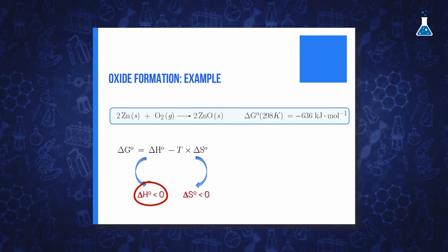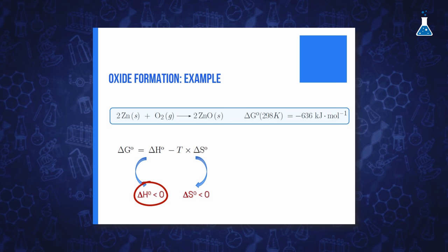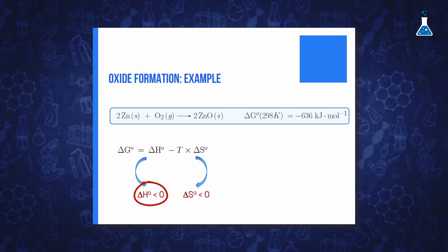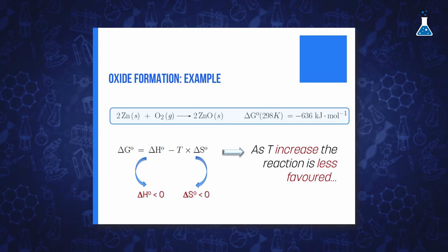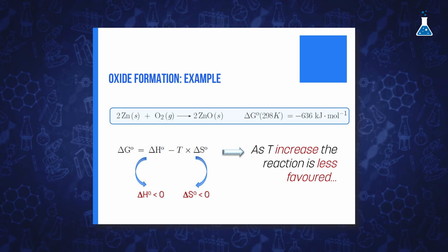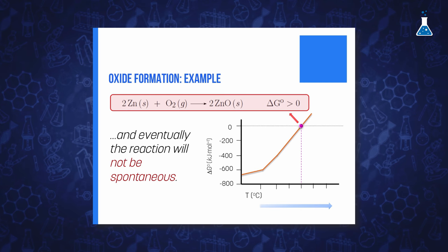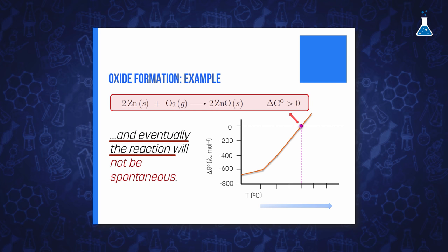The negative value of the Gibbs energy for the oxidation of tin favors the reaction of oxidation. The increase of the temperature will gradually make the value of this energy less negative and eventually it will reach the value of zero.